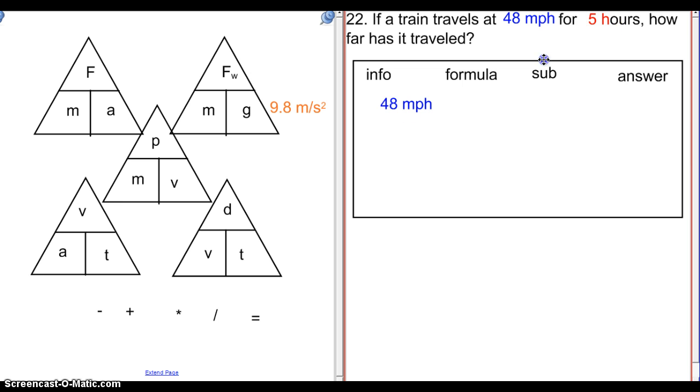So next we have another problem using the speed formula triangle. Time is in hours. Velocity is in miles per hour. Remember, for velocity, you're going to have two units. You'll have miles per hour or M slash S or KM slash H, something that has two different units in it, both a distance and a time. We do not have D, so that's what we're solving for. If we cover this up, we have V next to T. That actually means that we are going to multiply. So D equals V times T in this case. It's a little bit different than our previous problem. And then you're going to go ahead and multiply that out. So you would do 48 times 5 to get your answer.